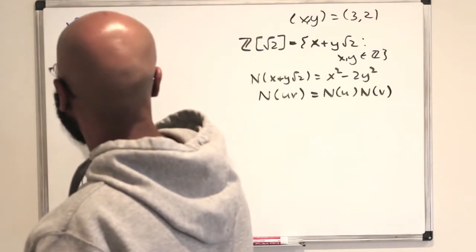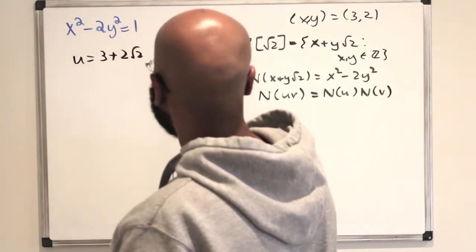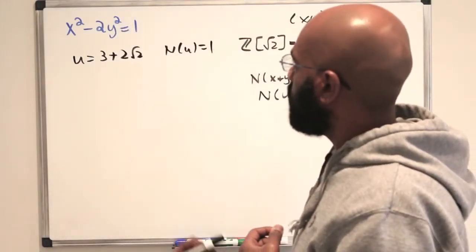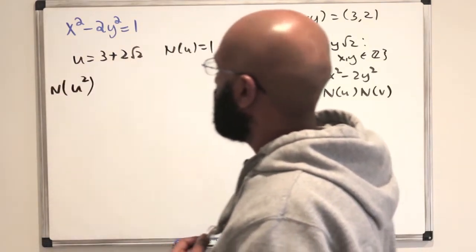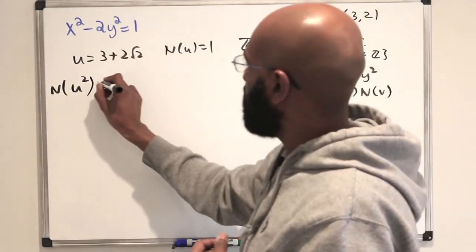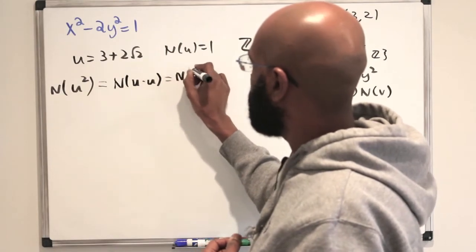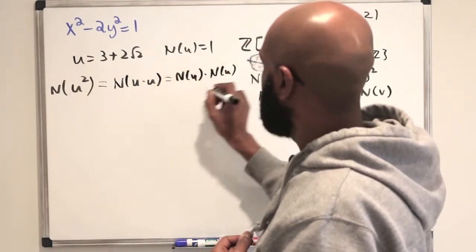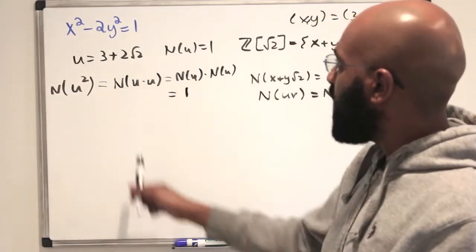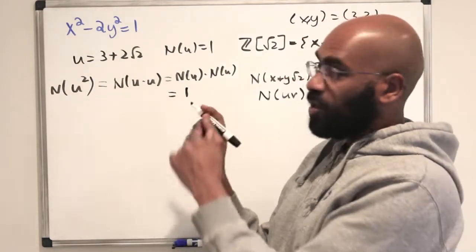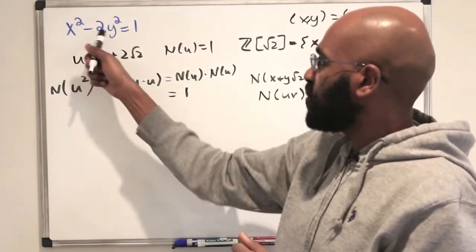Let u be the explicit number 3 plus 2 root 2, which we know has norm 1. Let's take a look at the number u squared. What is the norm of u squared? Well, according to our multiplicative property, since this is the norm of u times u, this has to be the norm of u times the norm of u — which, because each of these has norm 1, has norm 1 as well. So if we expand u squared, the coefficients in our number system will give us another solution to this equation.